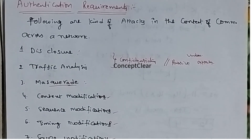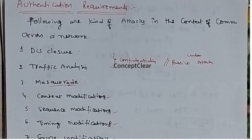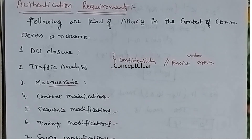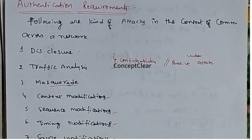Source modification is denial of the transmission of messages by the source — meaning from the source side, the message transmission will be denied or delayed. Destination modification is denial of receipt of the message by the destination — similarly on the receiver side, the message is denied or delayed.